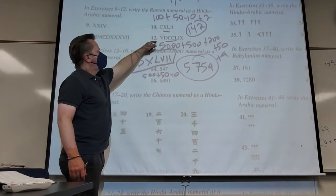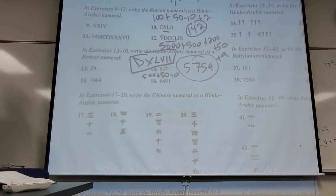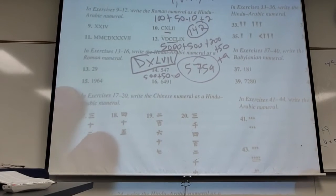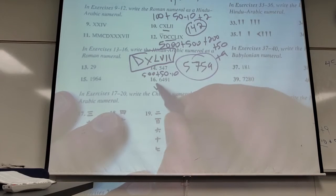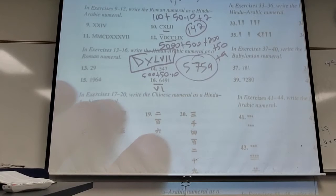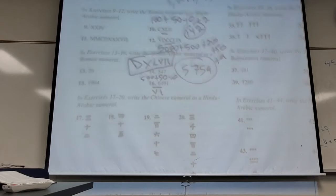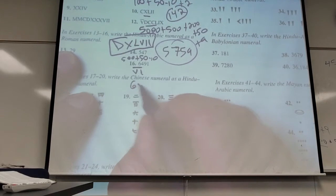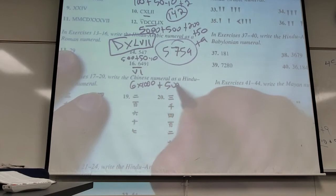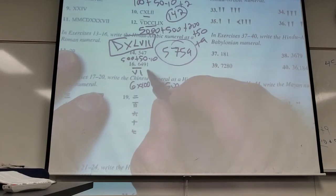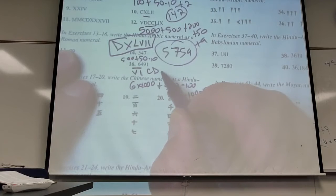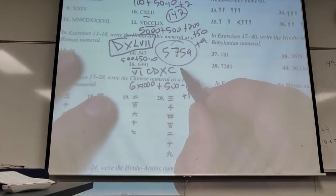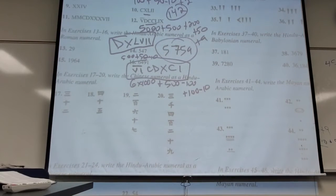And how do you do 40? Good. So it'll be 50 minus 10, so it'll be XL. Is that cool? So this will be 500 plus 50 minus 10 plus seven. Of course, seven is just D, I. Kick ass.